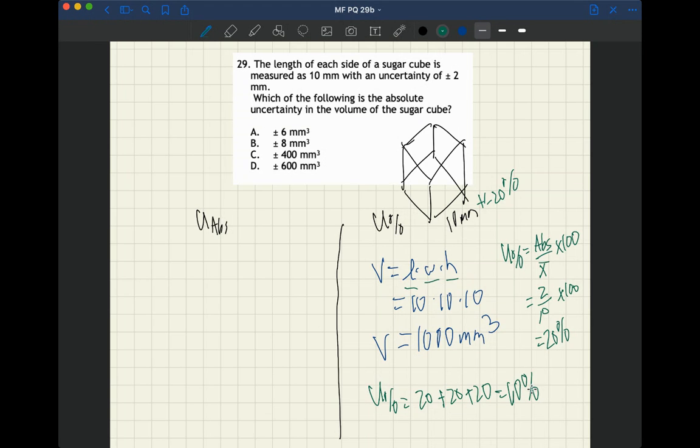Sixty percent of 1000 is 600. So the absolute uncertainty is 600 cubic millimeters. So that's the first way to find that.